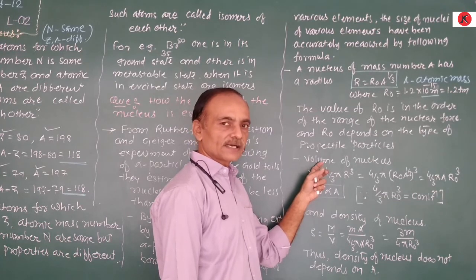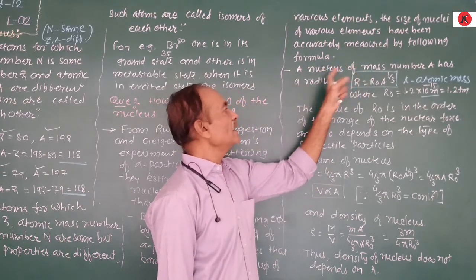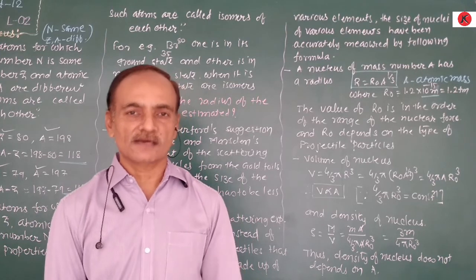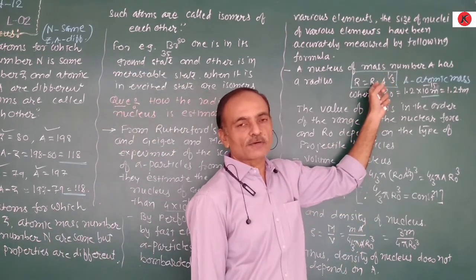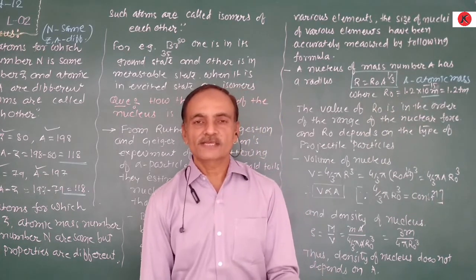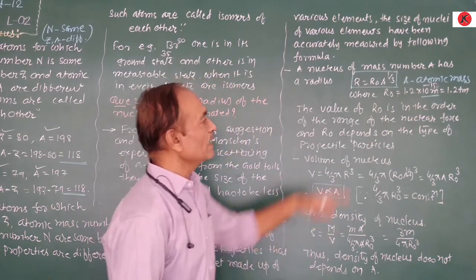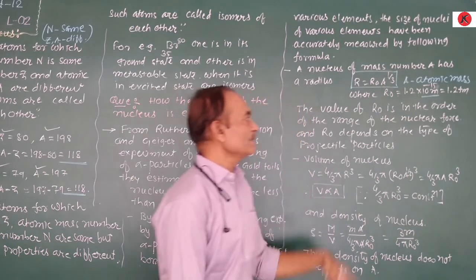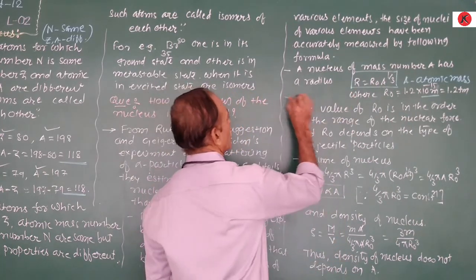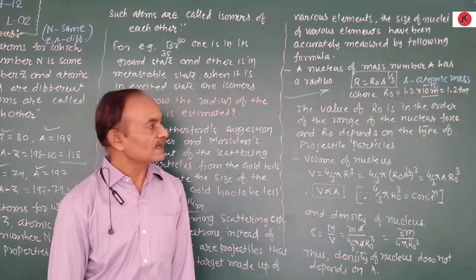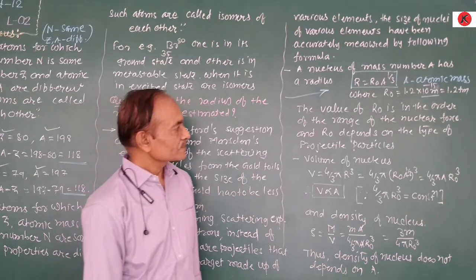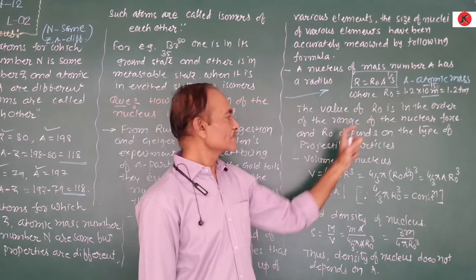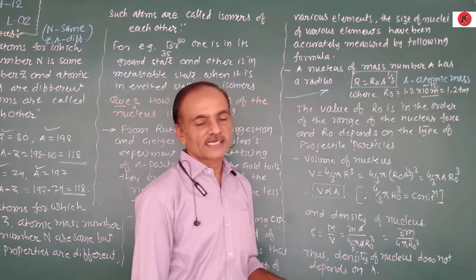A nucleus of mass number A has the radius given by the formula R = R₀ · A^(1/3), where A is the atomic mass number and R₀ is the constant with value 1.2 × 10⁻¹⁵ meters. This equation is very important for objective-type MCQ questions. The value of R₀ is in the order of the range of nuclear processes, and R₀ depends on the type of projectile particle.